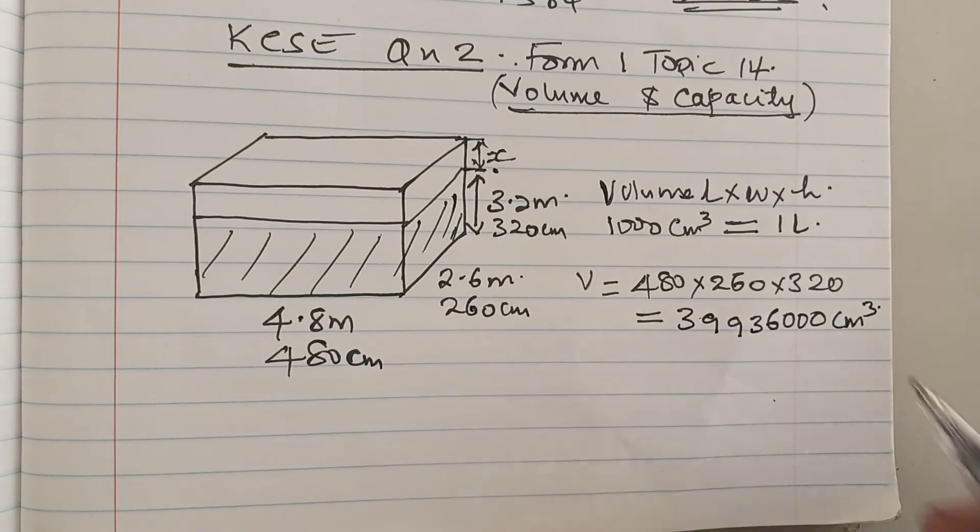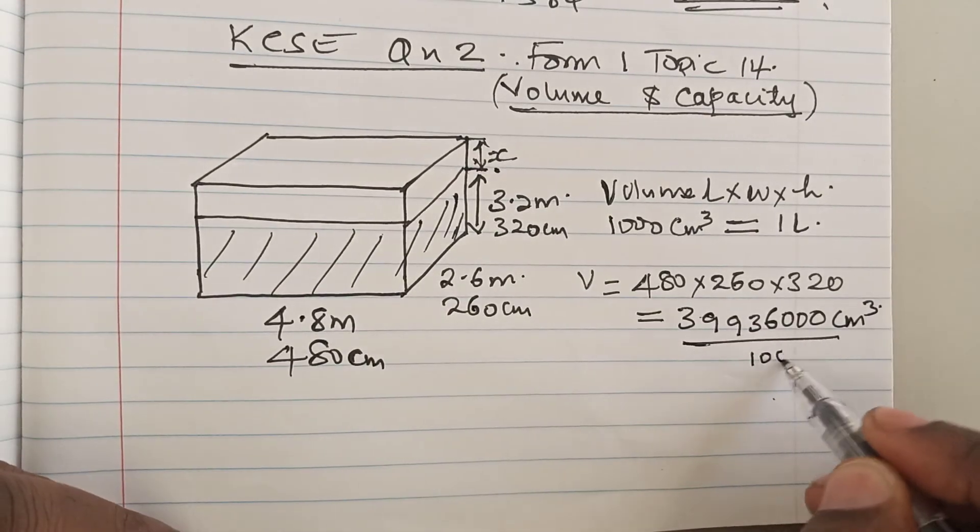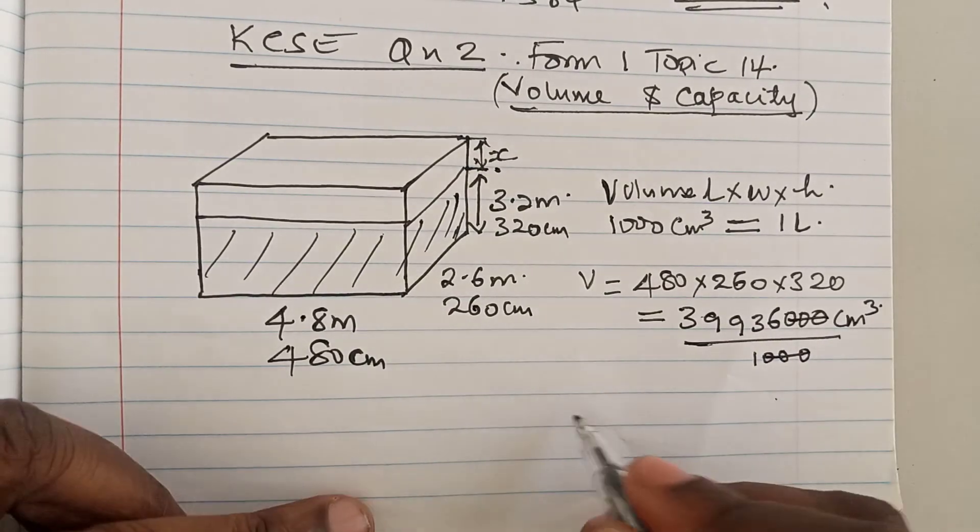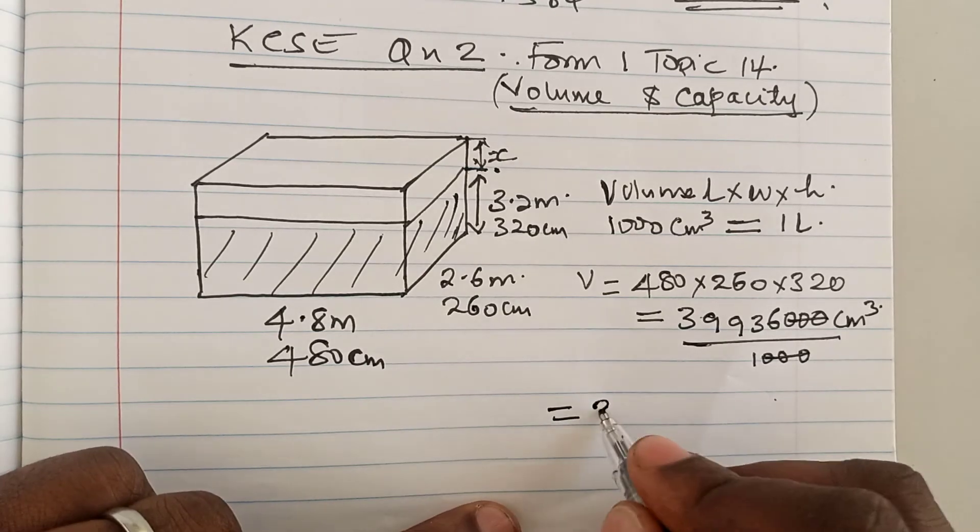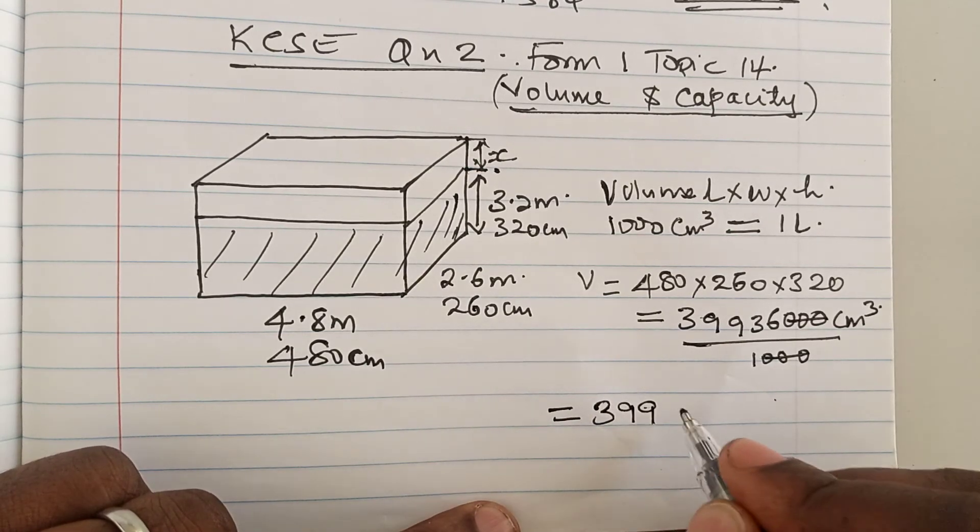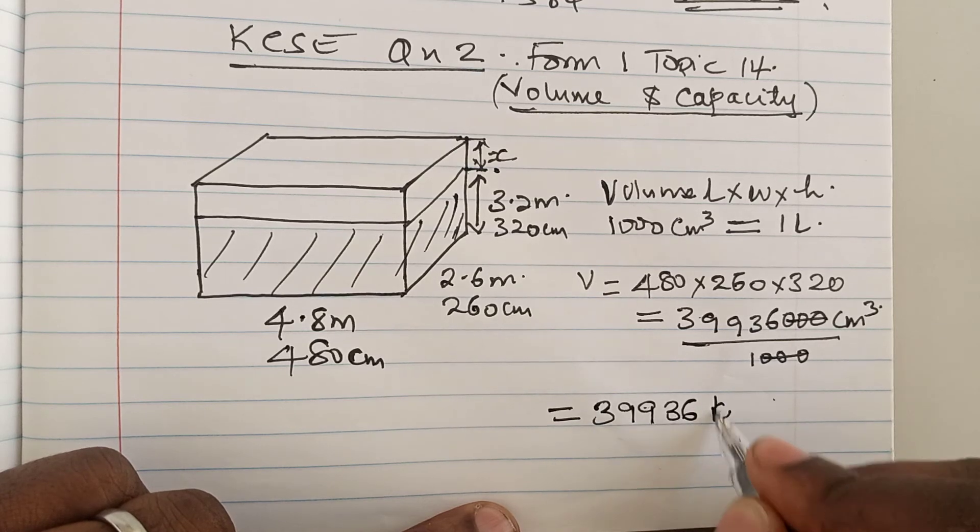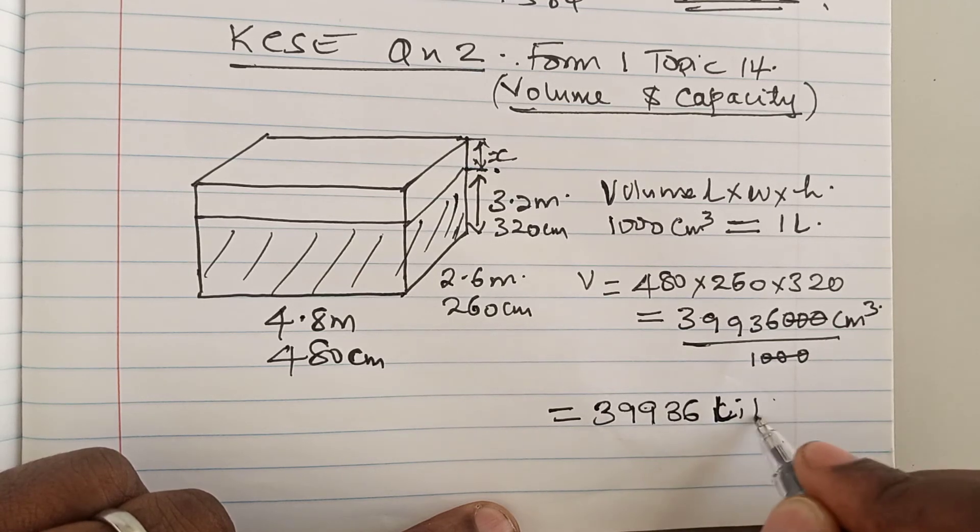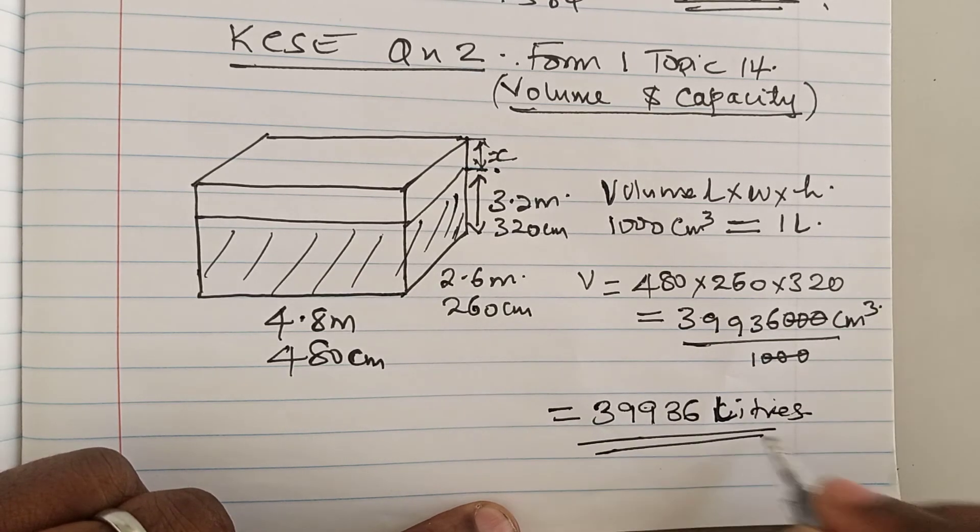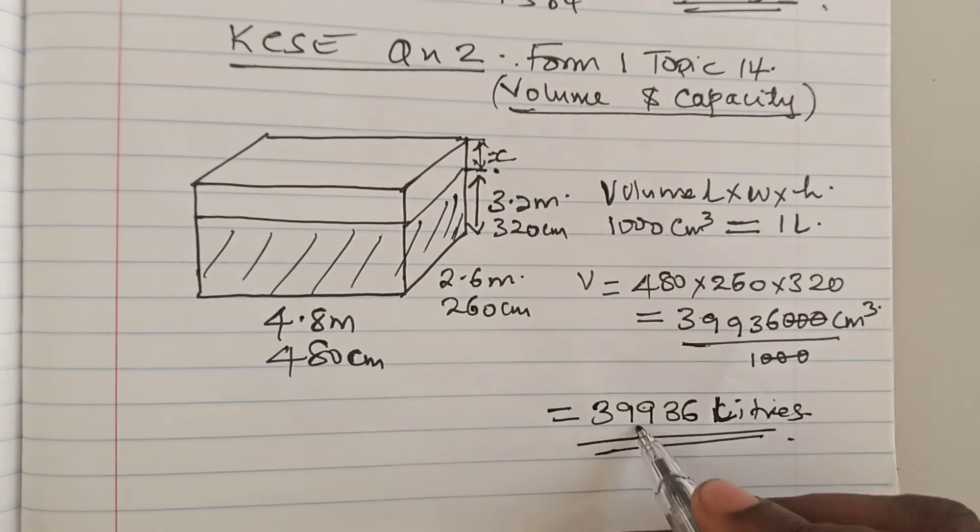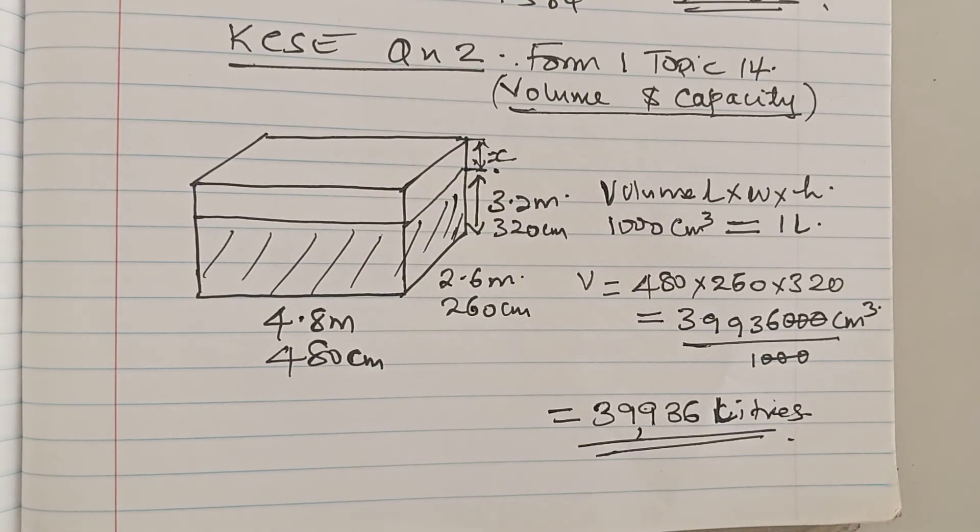Now to make them liters, you simply divide by 1000, and our final submission is going to be 39,936 liters of water. So 39,936 liters will actually be the volume of the water in the tank.